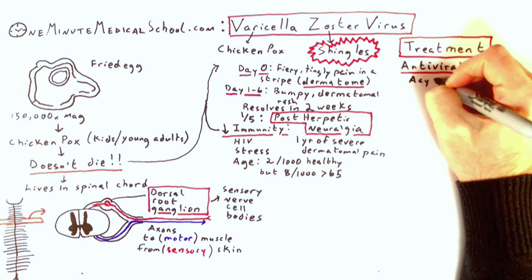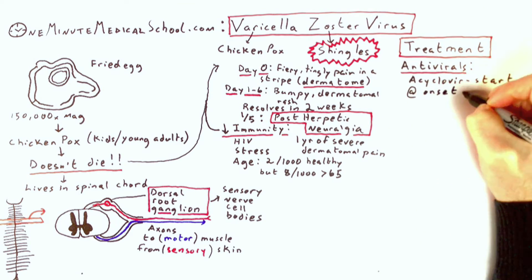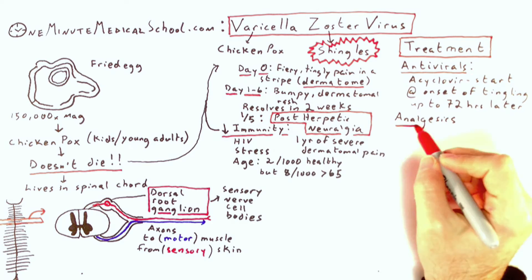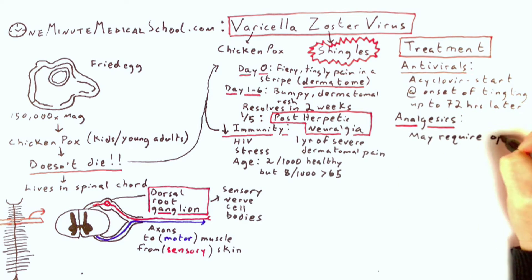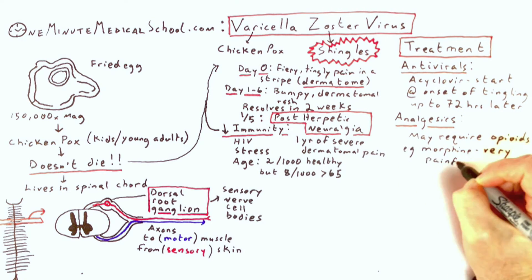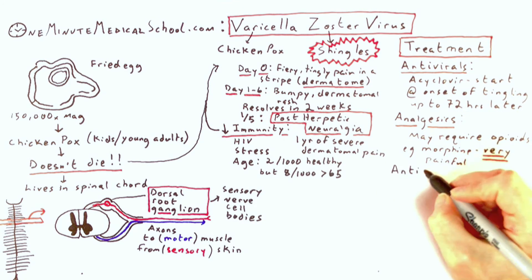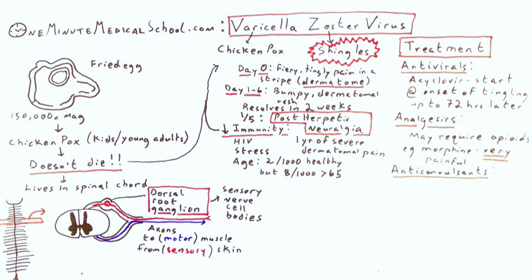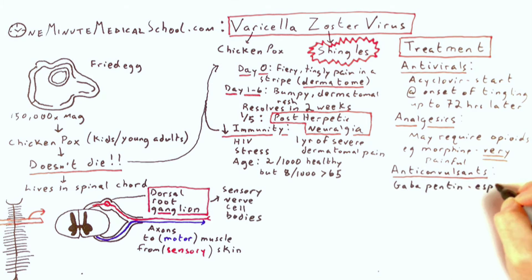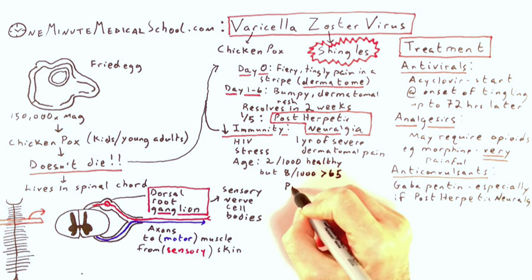Antivirals are used up to 72 hours from the onset. Analgesics up to opioids such as morphine are used because zoster is very painful. Anticonvulsants such as gabapentin are used to treat post-herpetic neuralgia.